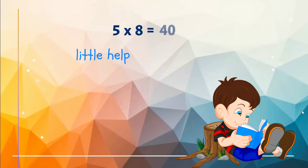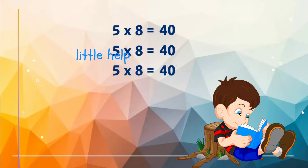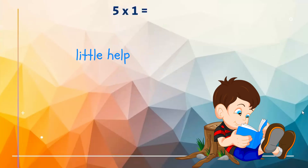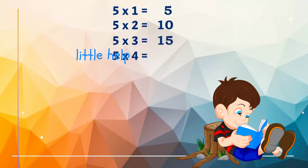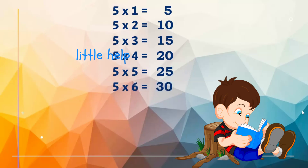Five eights are forty. Five ones are five, five twos are ten, five threes are fifteen, five fours are twenty, five fives are twenty-five, five sixes are thirty, five sevens are thirty-five, five eights are forty.